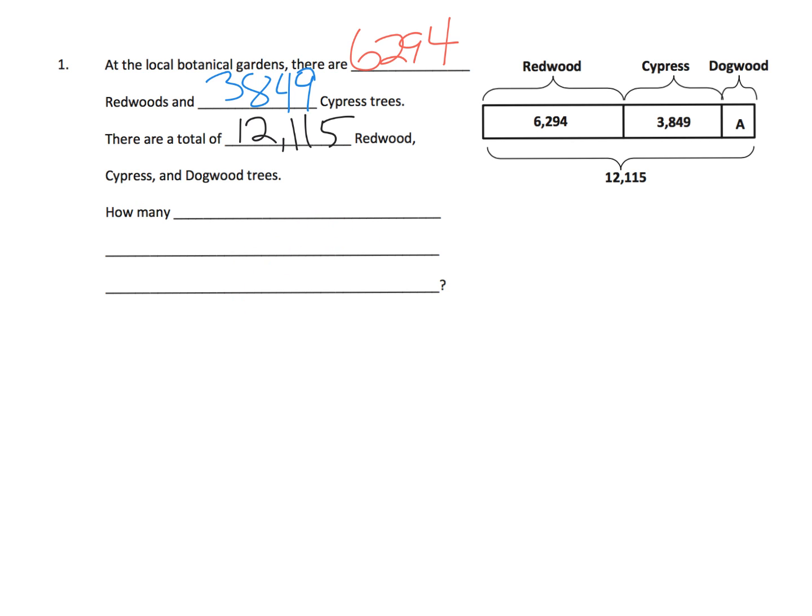So the question is, where is the question in this tape diagram? What are we being asked? What is this tape diagram suggesting the question might be? And since we know how many redwoods, we know how many cypress, we know how many totals, we don't know how many dogwoods there are. So that's going to be our question. So a student might write, how many dogwood trees are at the garden? That's one potential question that students could write.